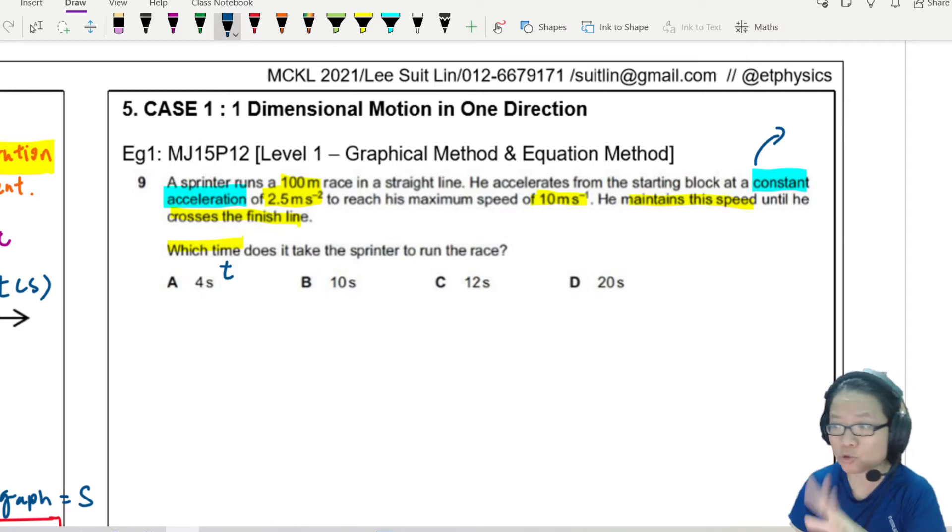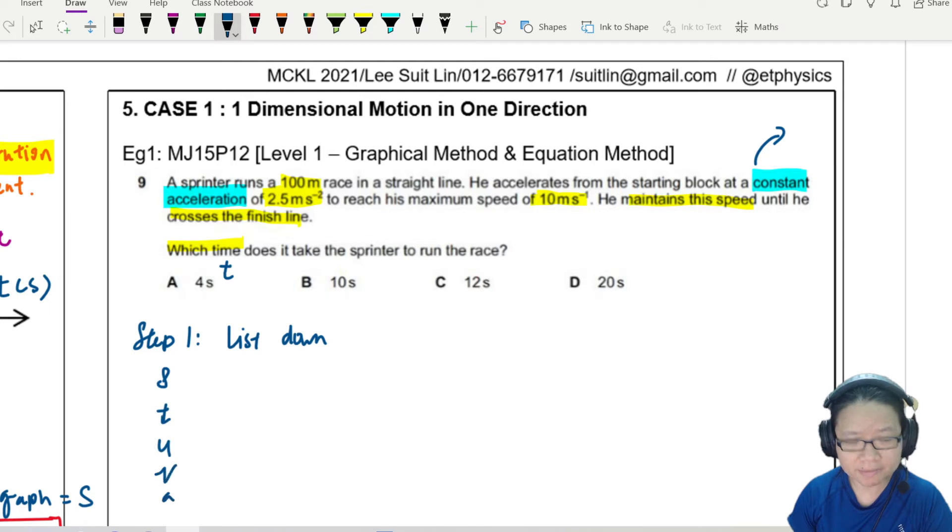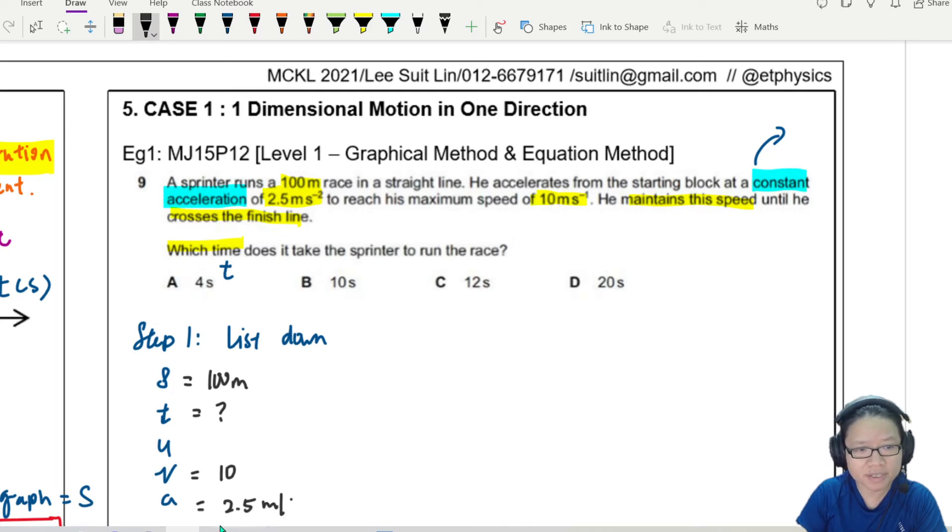So step one, I will list down STUVA. When listing down these things, if let's say we put in 100 meter here, we are looking for T, maximum speed is 10, this is 2.5 meter per second squared.